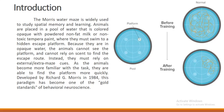There is a platform present in the water pool and the animals are required to find it. Due to the impaired visibility, they cannot rely on their scent to find the escape route; instead they must rely on external extra-maze cues. As the animals become more familiar with the task, they are able to find the platform more quickly and more frequently. This was developed by Richard G. Morris in 1984.